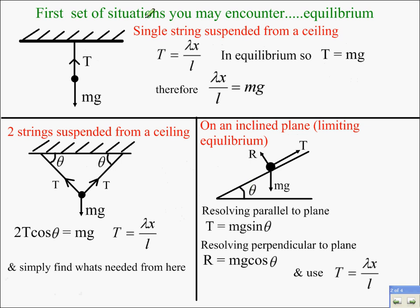Right, first set of situations where your particle is in equilibrium. Simplest situation you'll get: particle hanging from an elastic string or spring. Use Hooke's law, and it's in equilibrium, so forces up equal forces down.